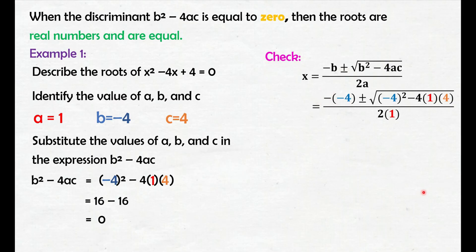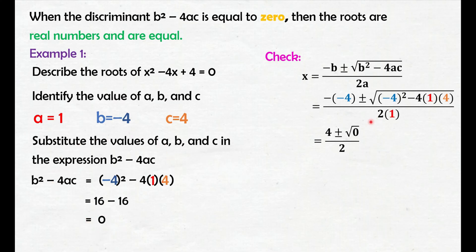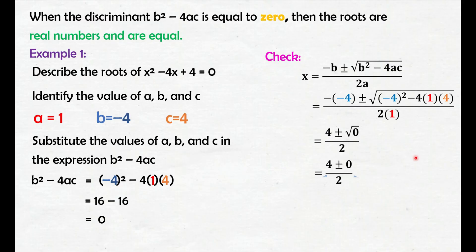Simplify natin: negative times negative 4, that is 4. Hindi na natin kailangang i-solve yung discriminant dito kasi nasolve na natin yan — that is 0. And 2 times 1, that is 2. Squared of 0 is 0 pa rin, kasi 0 times 0 is 0. Separate natin yung positive sa negative.